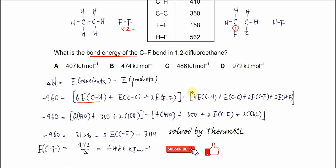Minus the products, bond energies of products. In the products there are four C-H bonds: one, two, three, four.